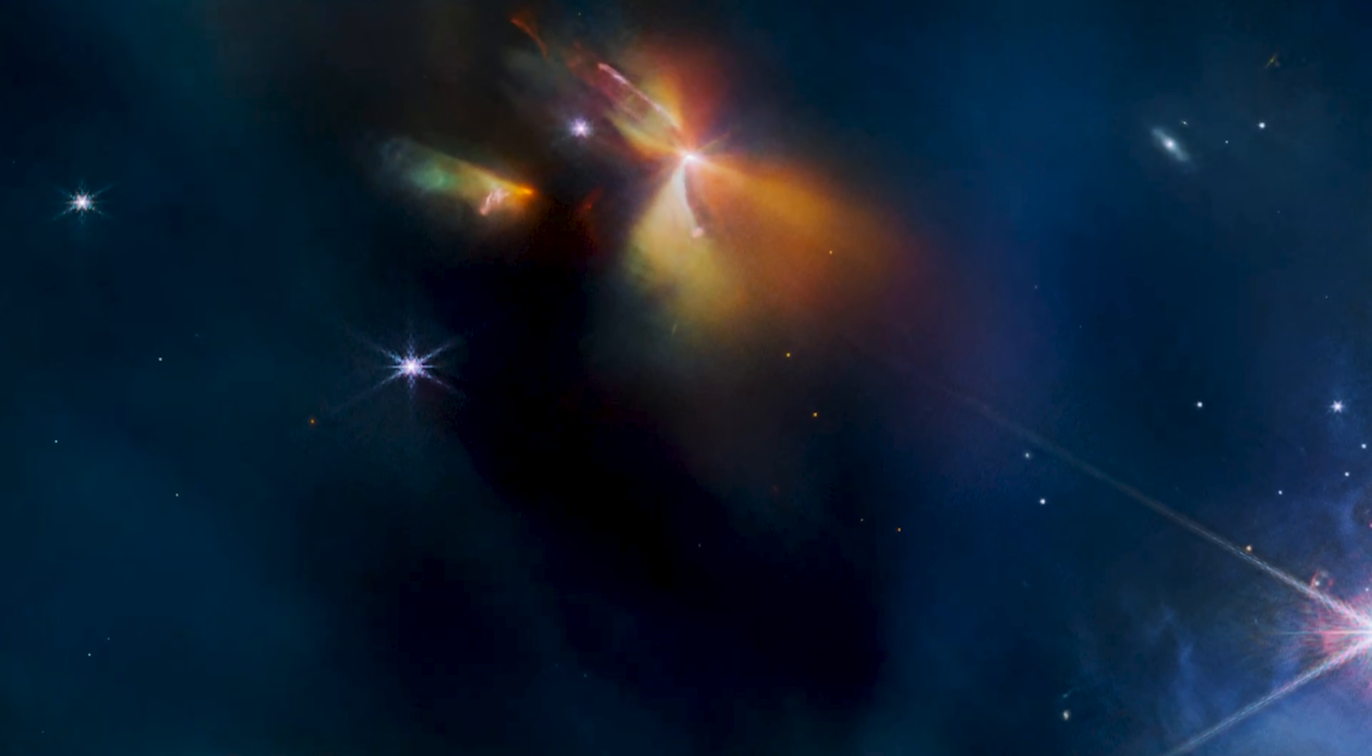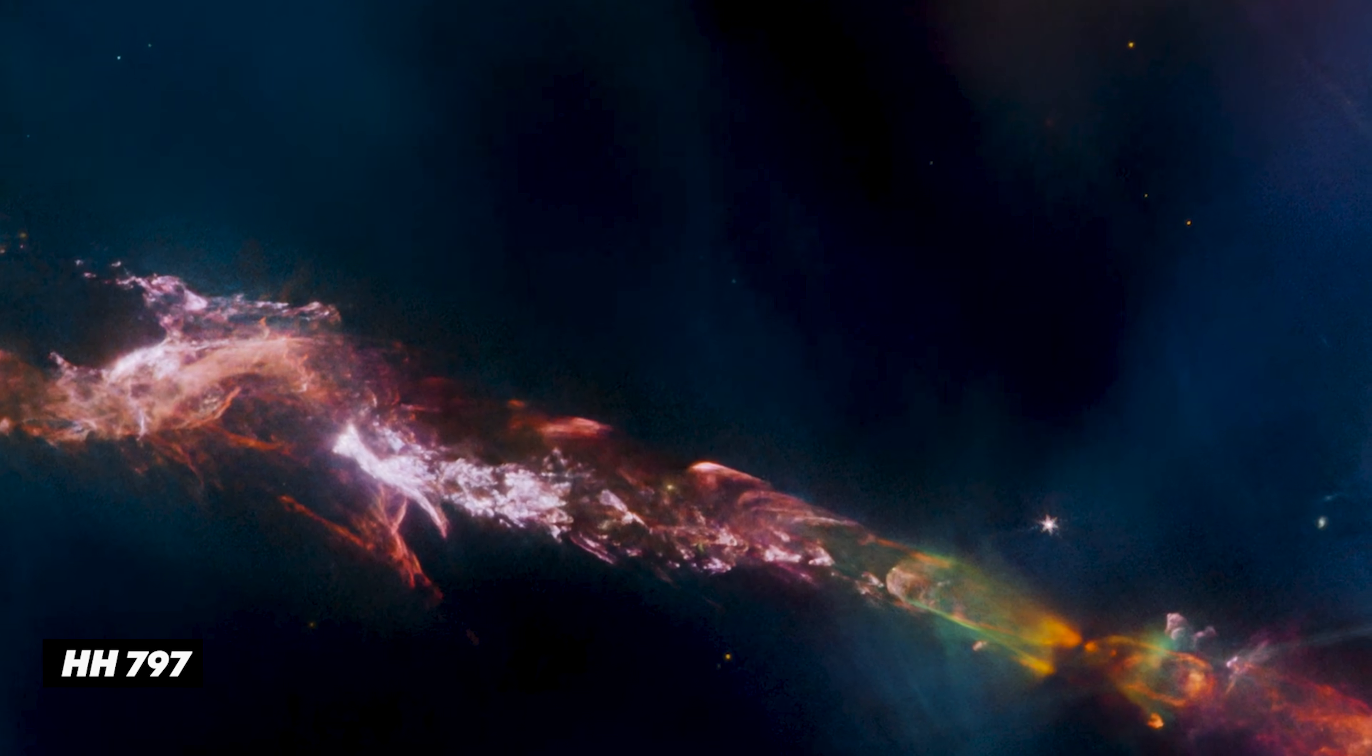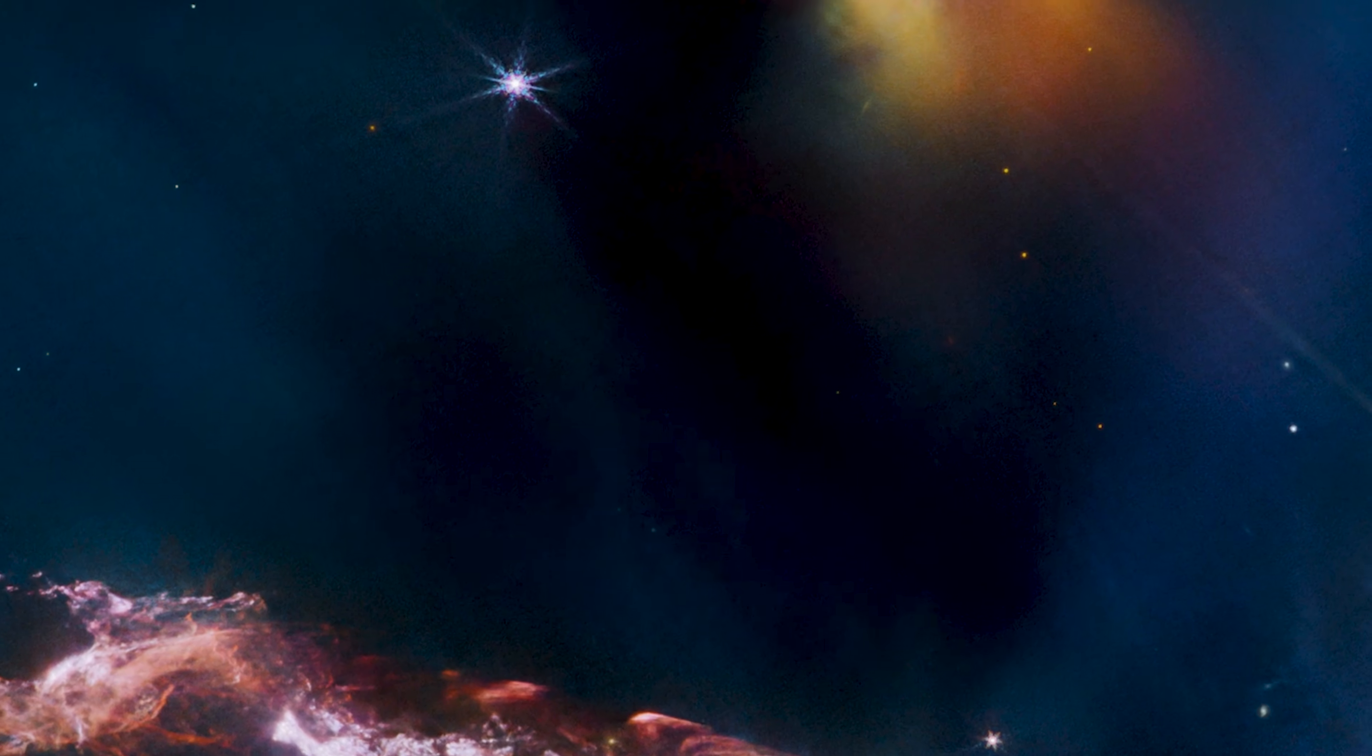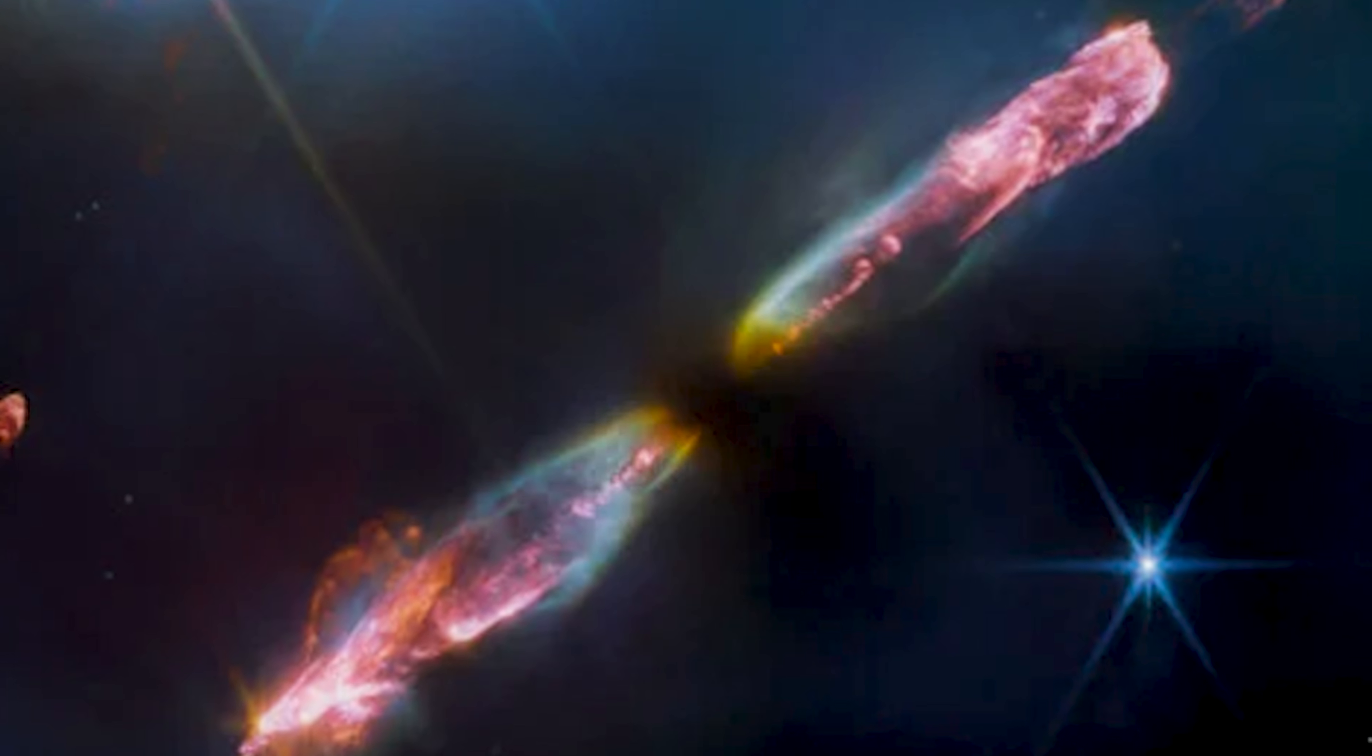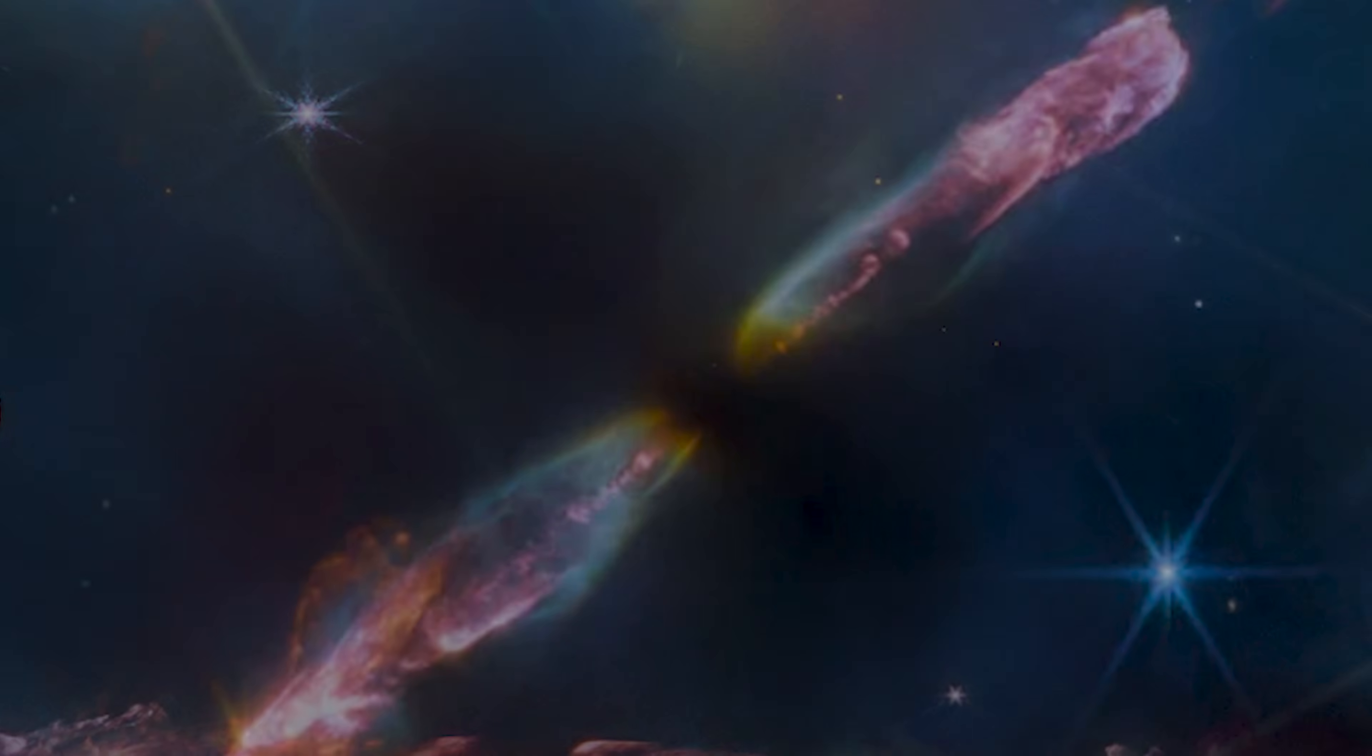In one extraordinary observation, it captured a Herbig Haro object known as HH797, where twin jets from a newborn star blast through surrounding gas and dust. What looks like a serene cloud from afar is revealed as a violent, sculpted environment shaped by energy, motion and time. These are the places where stars are born, where galaxies slowly assemble themselves. And they offer a crucial clue.